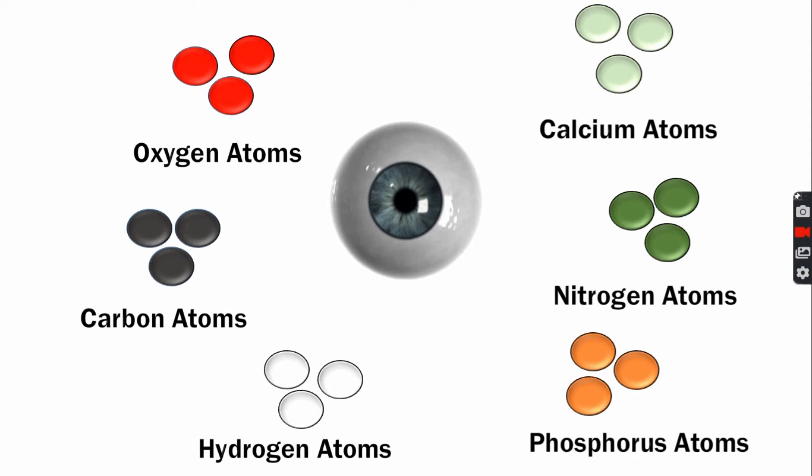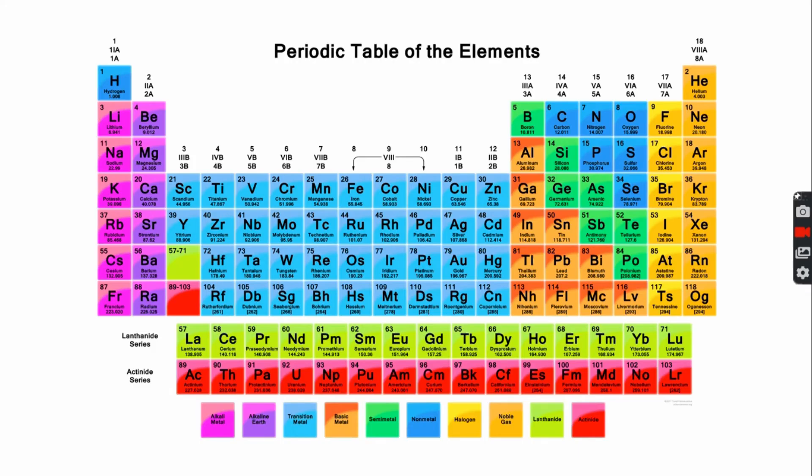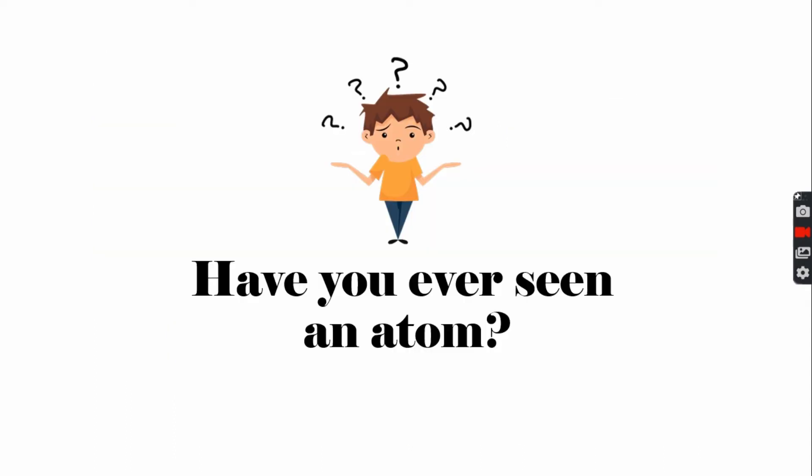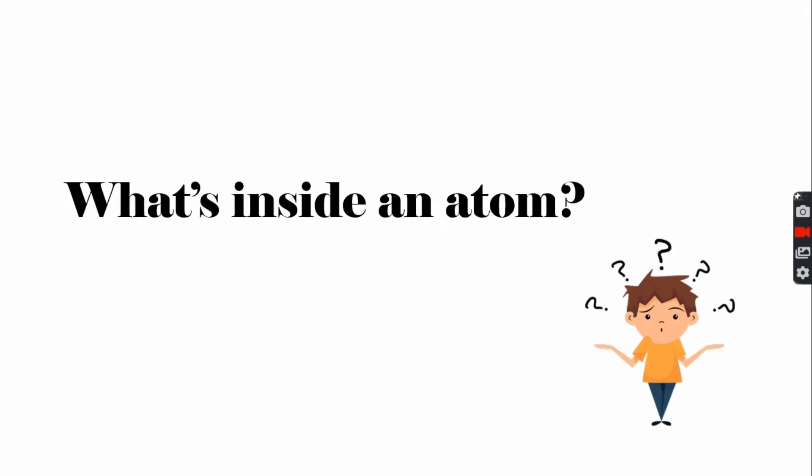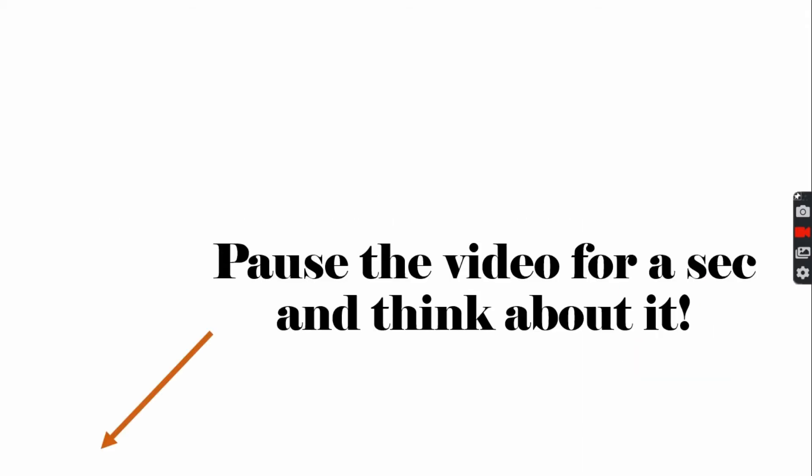Scientists have discovered so many kinds of atoms and you can see them laid out on a chart called the periodic table. The question now is, have you ever seen an atom? What does an atom look like? What's inside an atom? Pause the video for a sec and think about it.